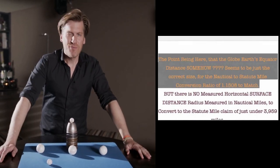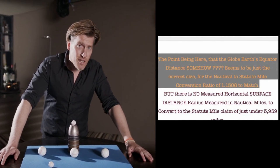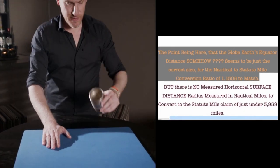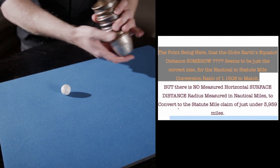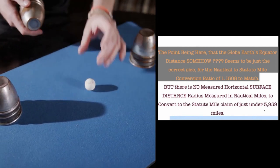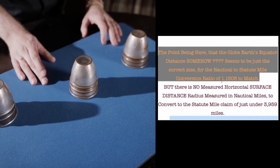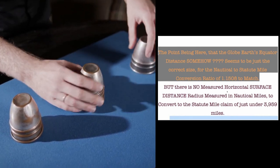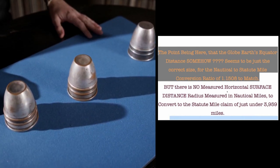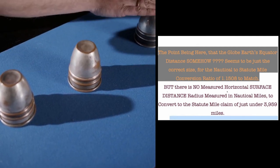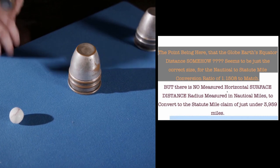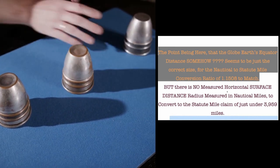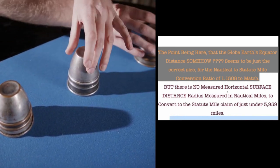The point being here that the Globerts equator distance somehow, question marks, seems to be just the correct size for the nautical statute mile conversion ratio of 1.1508 to match. But there is no measured horizontal surface distance radius measurement in nautical miles to convert to the statute mile claim of just under 3959 miles. So the point I'm making here is there is no radius measurement to support this claim. Somehow the globe's equator matches this perfect, and I've heard this countless times since 2015 about how around the circumference of the globe the nautical, the statute just matches and it all goes so perfect. And this has been kind of a globe claim for a long time.